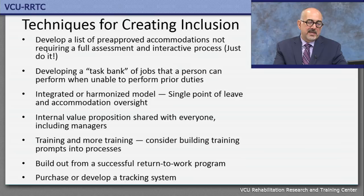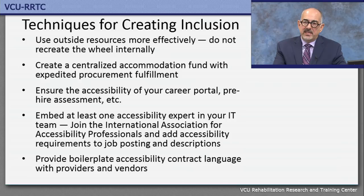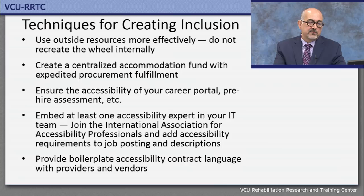Purchase and develop a tracking system. Use your outside resources. Create a centralized accommodation fund. Ensure accessibility of your career portal and applicant tracking system. Embed at least one IT accessibility expert in your IT team, trained by the International Association of Accessibility Professionals, to be the voice of accessibility in all products and services you use. Provide boilerplate accessibility contract language with vendors, setting the expectation that you require accessibility in your applicant tracking system and other information systems. For more information, please contact the Job Accommodation Network.